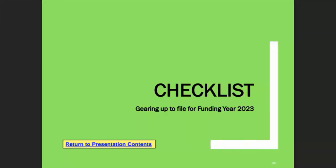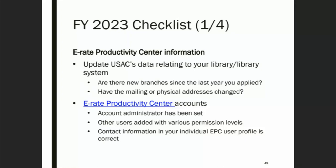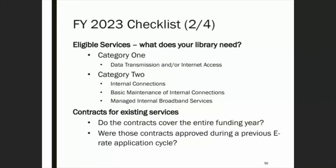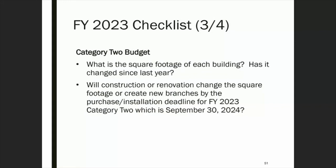Here's a brief checklist for things to do to prepare for funding year 2023: make sure information about your library and system is updated; ensure anyone who needs a system account has one; figure out what your library needs and whether you have existing contracts; if seeking category two funding, make sure your budget information is accurate; and if there's a construction project, know the estimated completion dates, because that affects whether you can ask for E-Rate discounts.